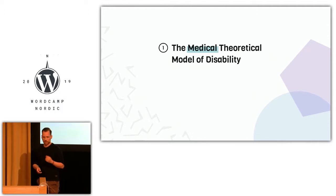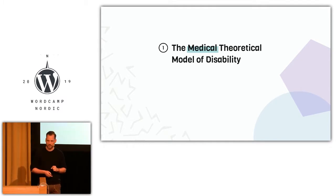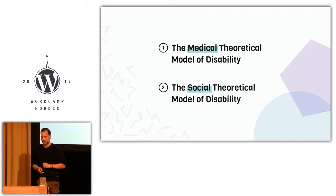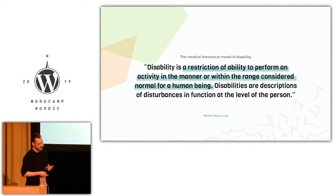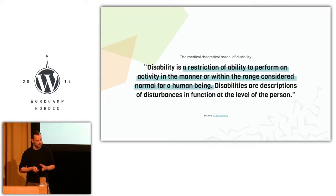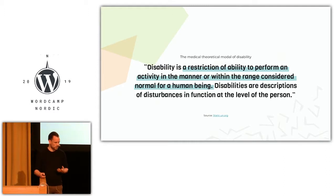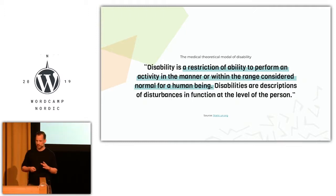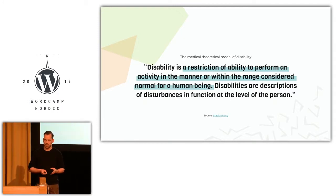Something I found really interesting in this bit of research is the so-called medical theoretical model of disability. The first one says: disability is a restriction of ability to perform an activity in the manner or within the range considered normal for a human being. Disabilities are descriptions of disturbances in function at the level of the person. This model basically looks at the disability as the problem that belongs to the disabled person.